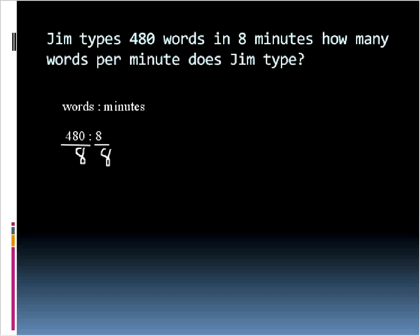A quick way to do 480 divided by 8 is just to look at it and say, well, what's 48 divided by 8? Just a quick trick. 48 divided by 8 is 6 and the zeros stay the same. And 8 divided by 8 is 1. So Jim is a pretty decent typist. Jim types 60 words per minute, WPM.